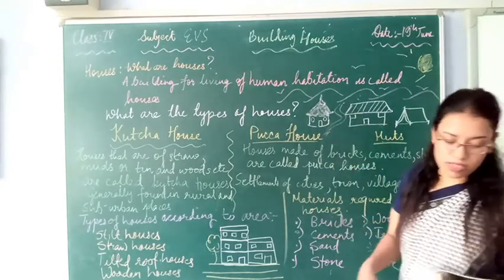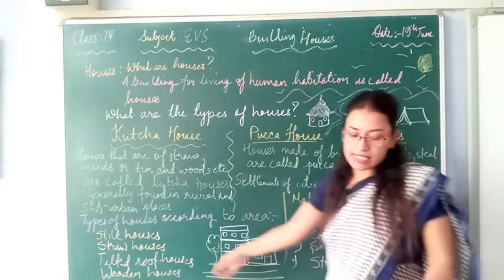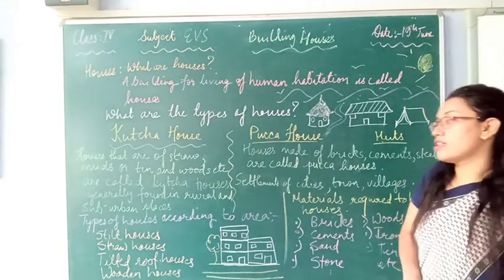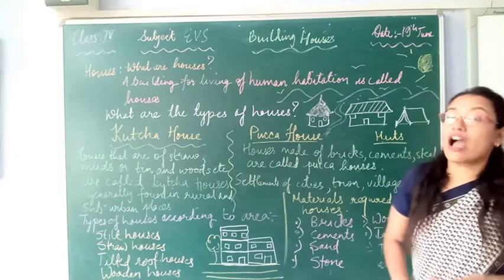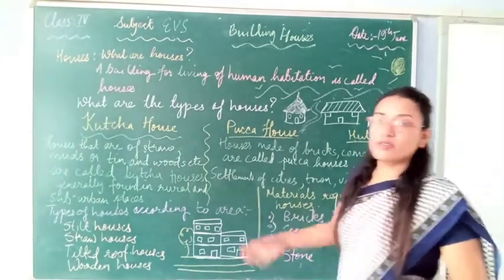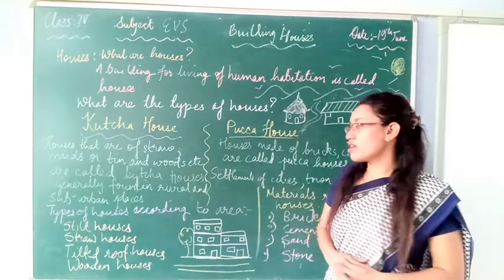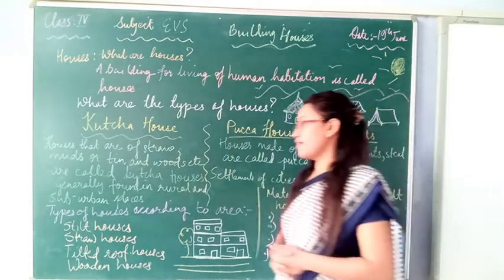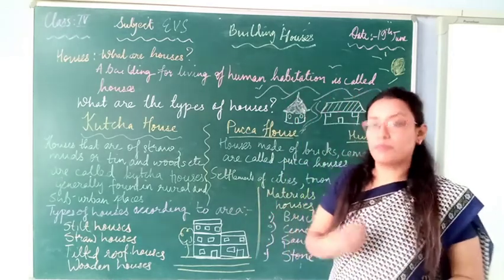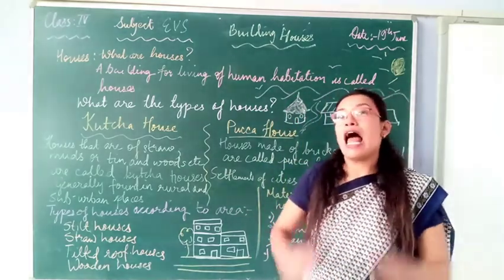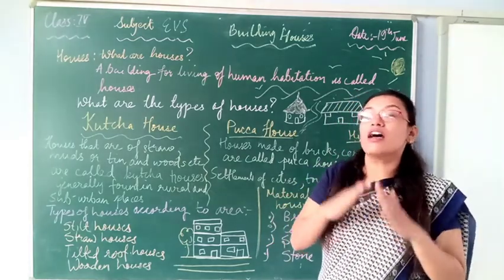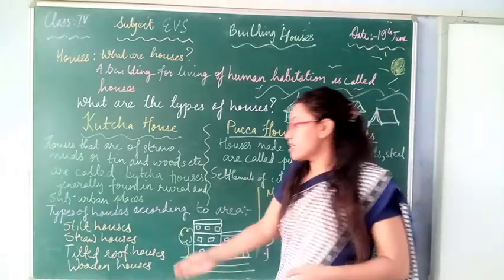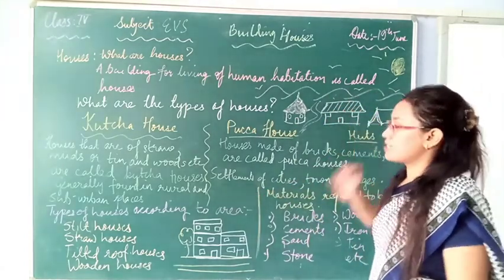That is why people prefer to live in straw houses in such regions. The third type is tilted roof houses. Tilted roof houses are found in places where there is heavy snowfall or extremely hilly places where snowfall persists. This kind of sloped roof helps the snow to slide down easily so that snow does not accumulate, and that is why these tilted roof houses are made in this way.